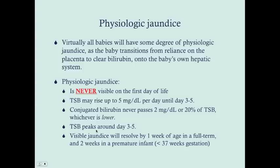The total serum bilirubin will peak around day three to five — the problem is babies are typically not in the hospital around then. Visible jaundice, if present, will resolve by one week of age in a full-term baby, and typically by two weeks of age in a premature infant, defined as less than 37 weeks of gestation. The reason it takes longer in the premature infant is that the baby's liver and GI tract still needs a few more days to come to maturity even after the baby is born.